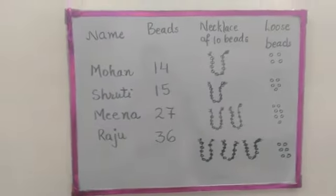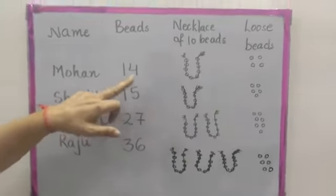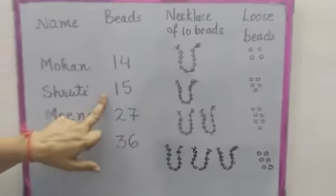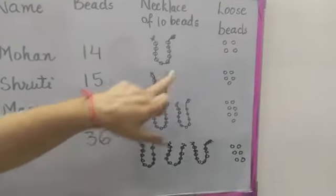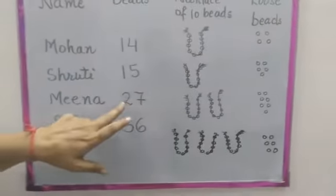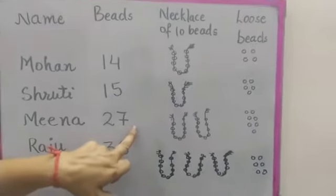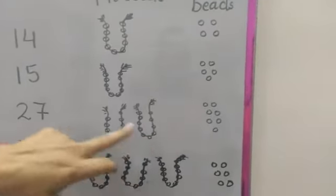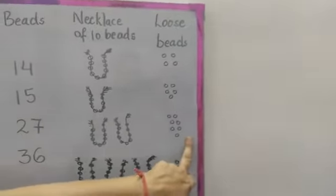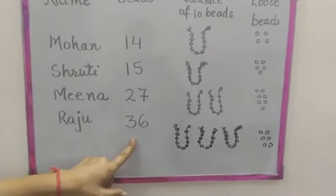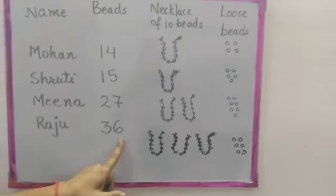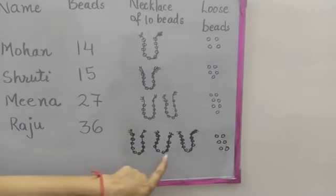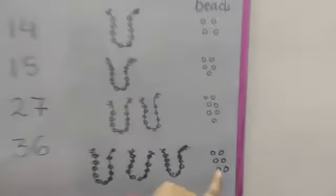Let's review: 14 means 1 ten and 4 ones — 1 necklace of 10 beads and 4 loose beads. 15 means 1 necklace of 10 beads and 5 loose beads. 27 means 2 tens and 7 ones — 2 necklaces and 7 loose beads. 36 means 3 tens and 6 ones — 3 necklaces: 10 plus 10 plus 10 equals 30, plus 6 equals 36.